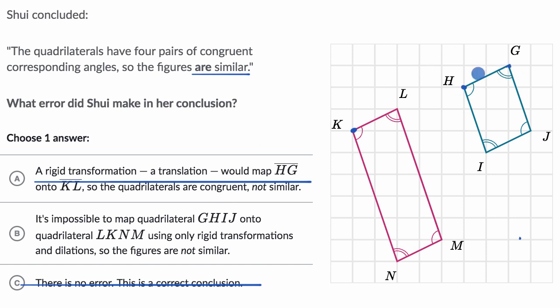You could try. You can map HG onto KL, but then segment IJ would look something like this. IJ would go right over here.